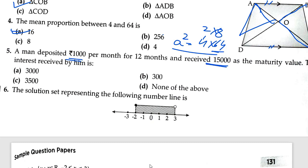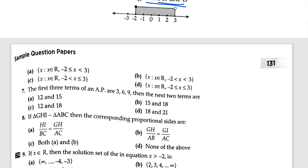The exact answer is 3,000 because 15,000 minus 12,000 (which is 1,000 into 12 months) equals 3,000. The sixth question: the solution set represents a number line. The correct option is A because it lies from minus 2 up to 3, so the value of x varies from minus 2 to 3.